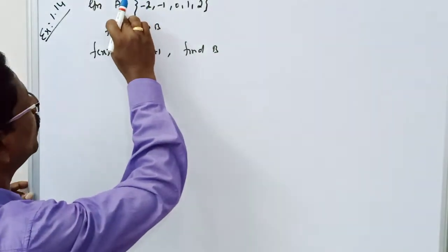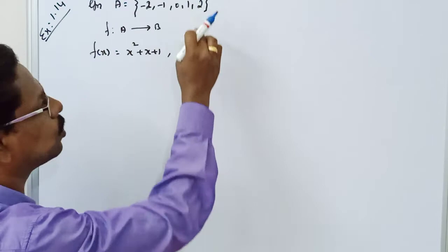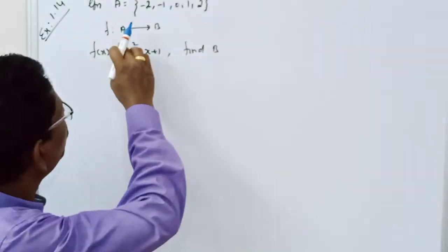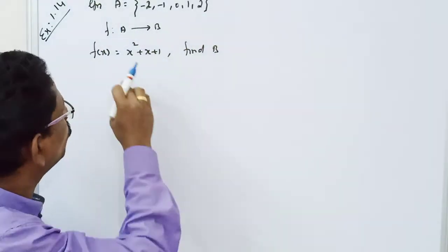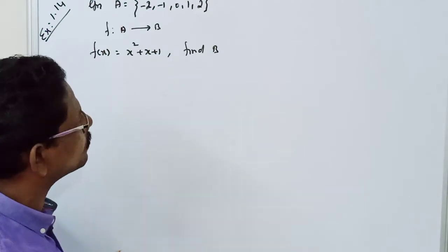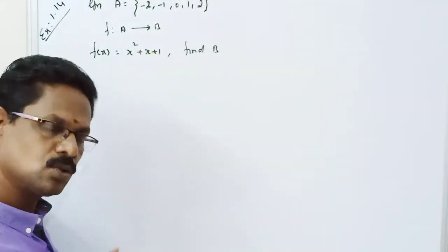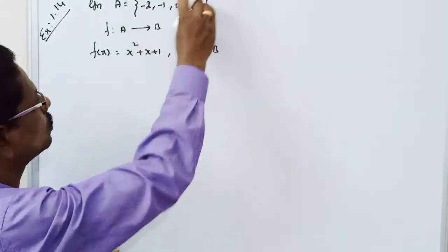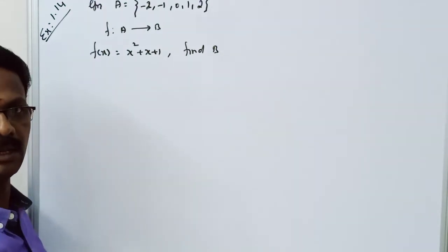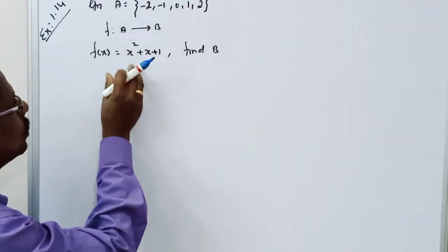Welcome to the video. Given set A equals {-2, -1, 0, 1, 2}, we're going from set A to set B. Your function is f(x) = x² + x + 1. We need to find the value set, the range.